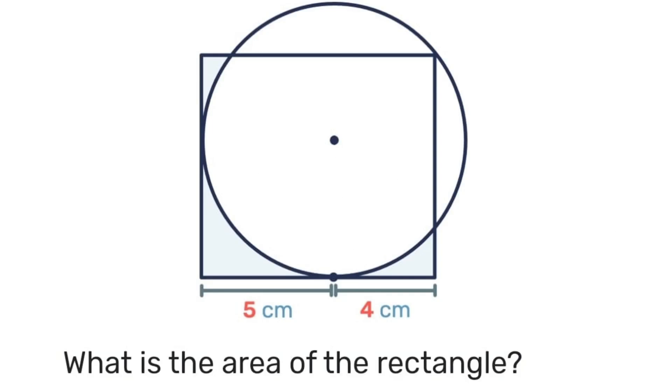You are asked to find the area of the rectangle given those two distances of 5 centimeters and 4 centimeters. Pause the video here, give it a try, and see if you get it right.